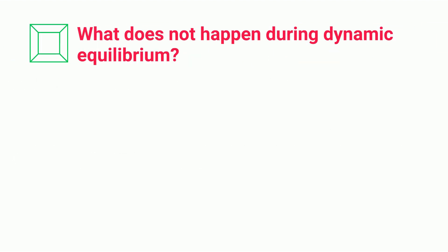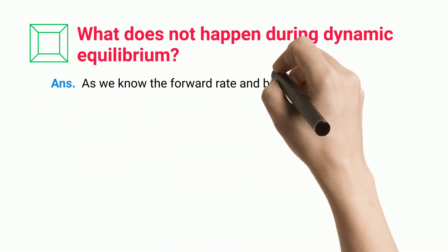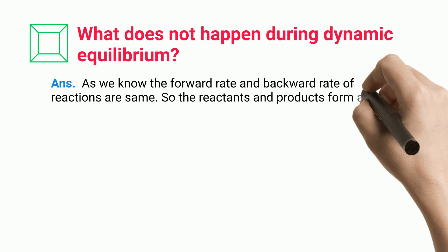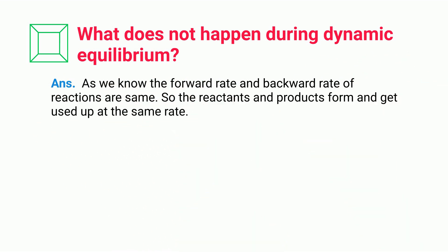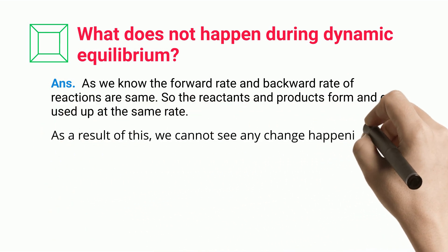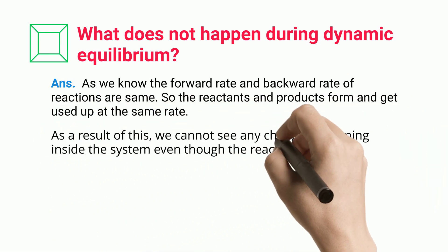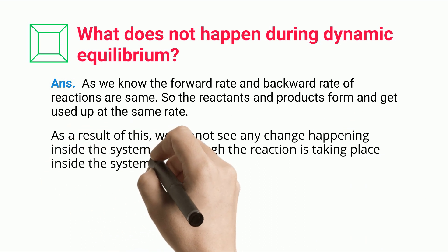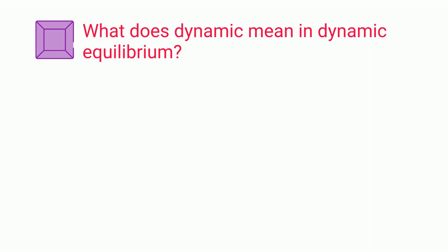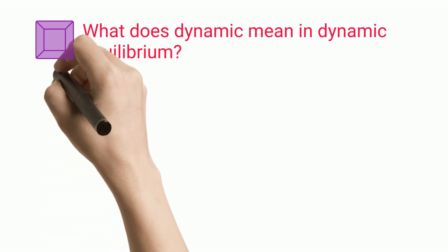What does not happen during dynamic equilibrium? Since the forward and backward rates of reaction are the same, the reactants and products form and get used up at the same rate. As a result, we cannot see any change happening inside the system, even though the reaction is continuously taking place.